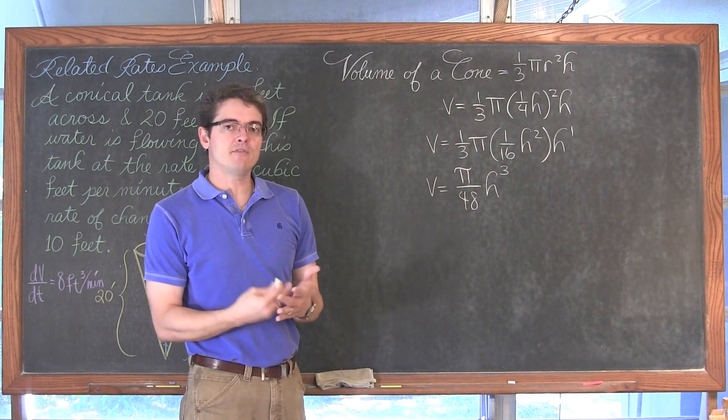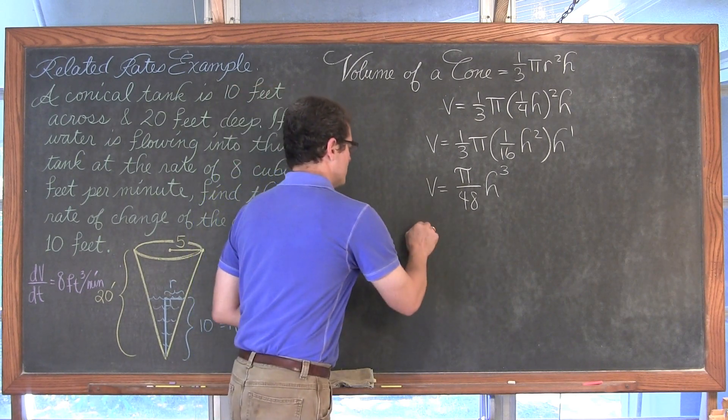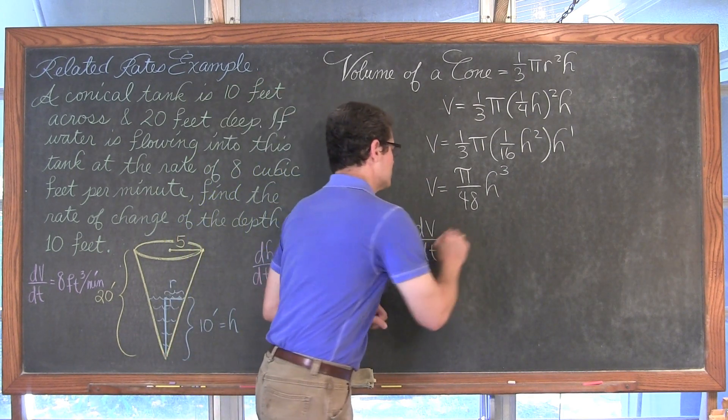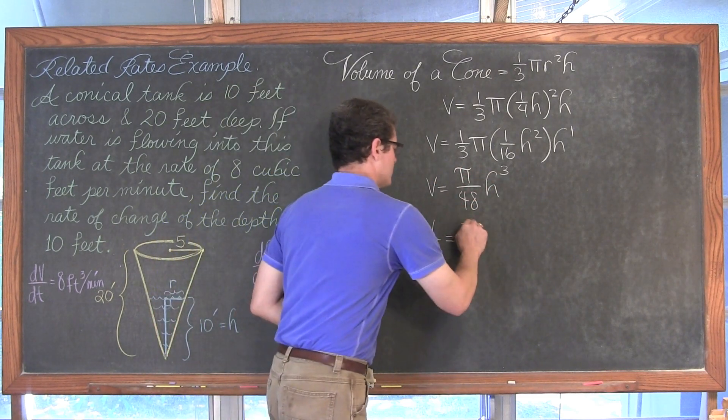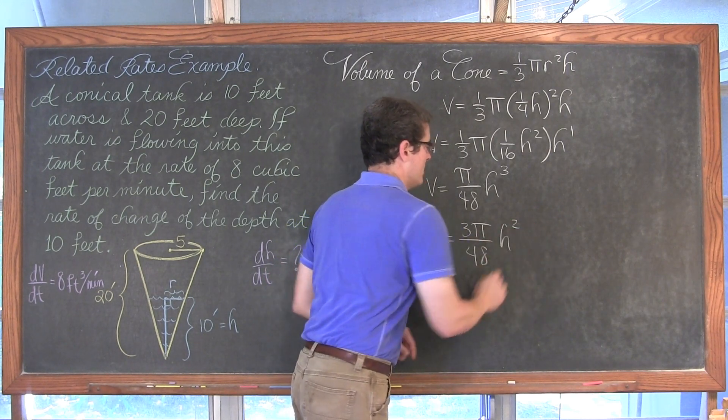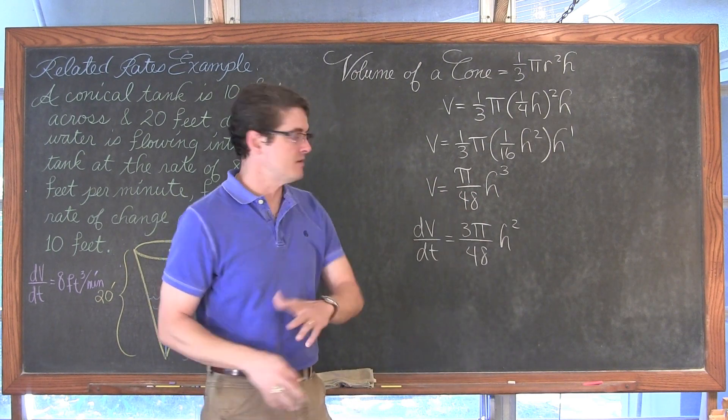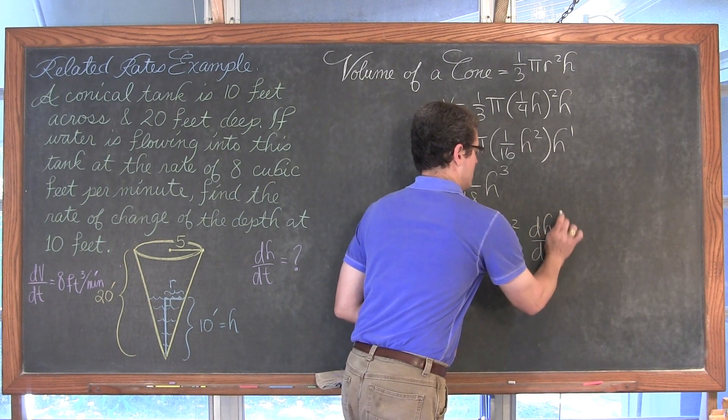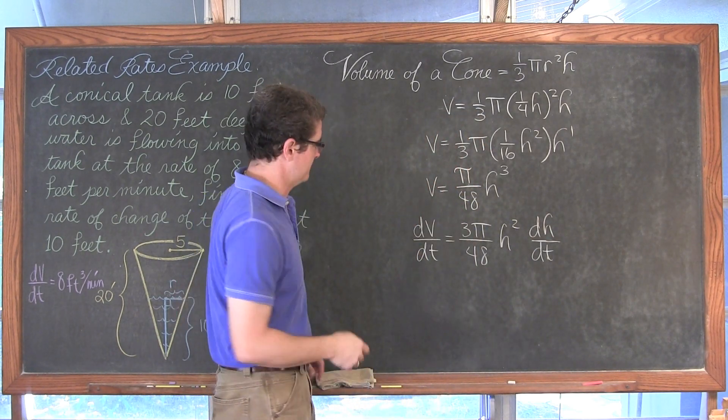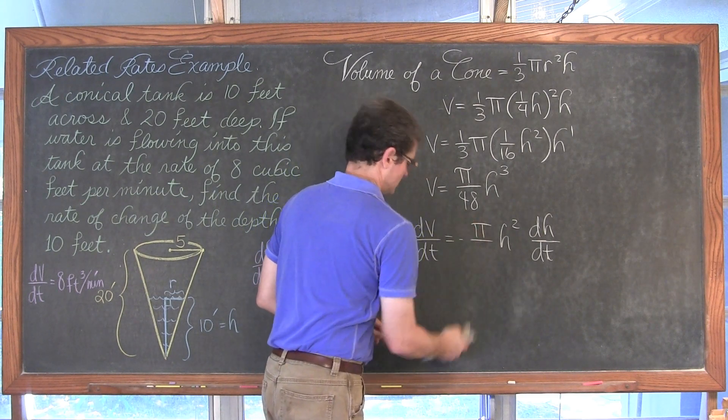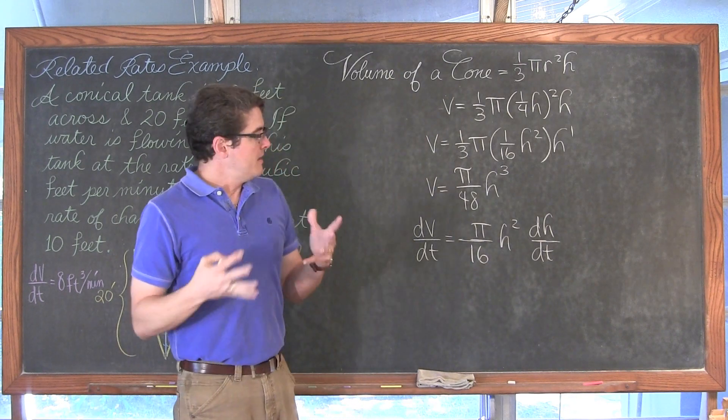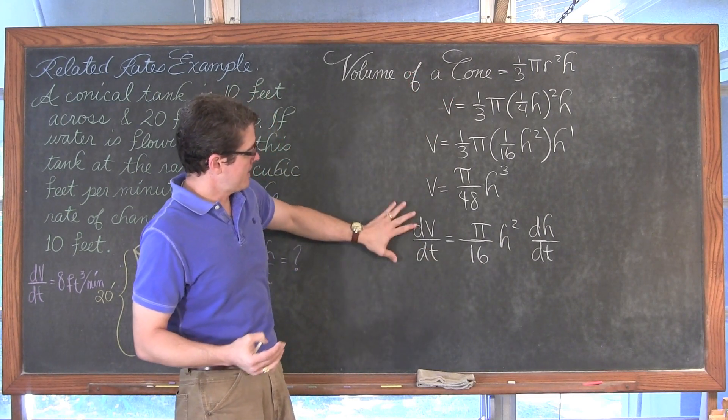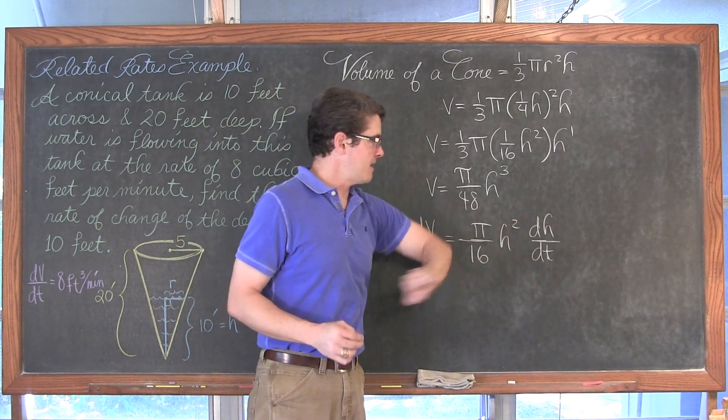Now when I find the derivative, dv/dt the derivative of volume with respect to time, 3 times pi over 48 is going to be 3 pi over 48 times h squared. And again we are finding the derivative with respect to time not just with respect to h. So we have to multiply by the derivative of that inside function or that base which is going to be dh/dt. And that simplifies to pi over 16 h squared dh/dt.